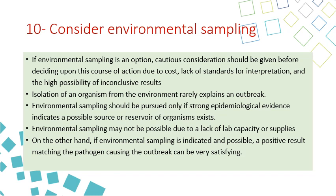Step number ten is to consider environmental sampling. If environmental sampling is an option, cautious consideration should be given before deciding to pursue this course of action, due to cost, lack of standards for interpretation, and the high possibility of inconclusive results. Isolation of an organism from the environment rarely explains an outbreak; environmental sampling should proceed only if strong epidemiological evidence indicates a possible source or reservoir of organisms. Environmental sampling may not be possible due to lack of lab capacity or supplies. However, if it is indicated and possible, a positive result matching the pathogen causing the outbreak can be very satisfying.